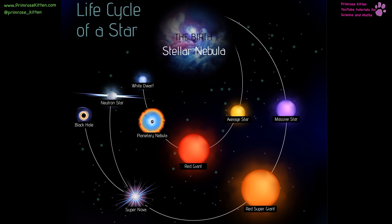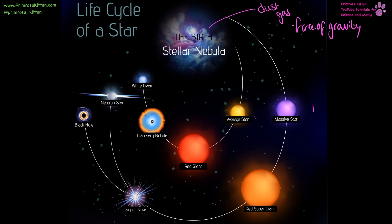Here we have the life cycle of a star. It is going to start off as a cloud of dust and gas, and these are going to come together under the force of gravity — because everything has gravity, no matter how small or how large it is. And then we are going to be a main sequence star.